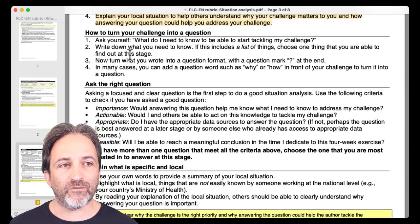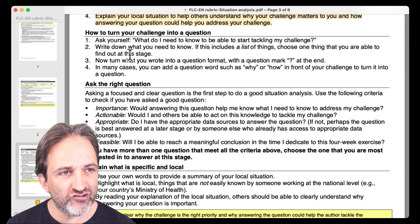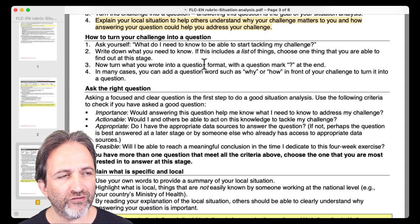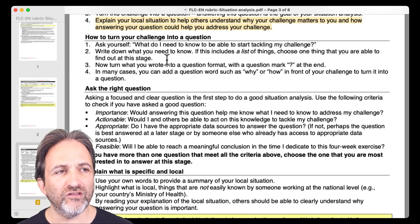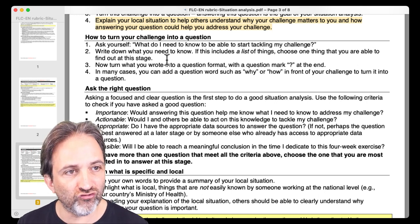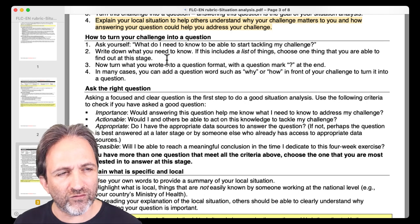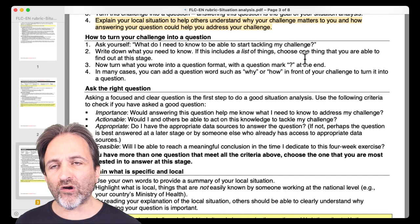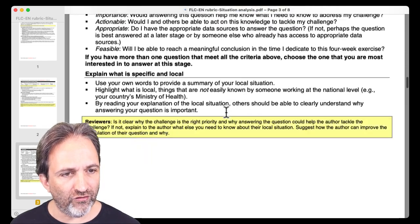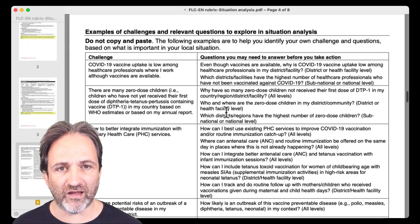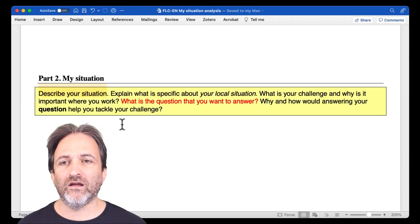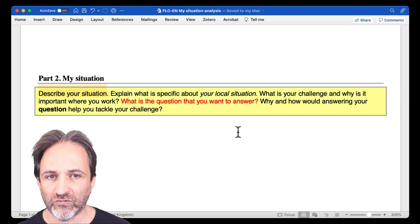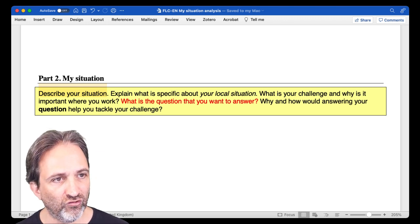Now, to go back to step three, or point three above, how to turn your challenge into a question, you can ask yourself, what do I need to know to be able to start tackling my challenge? Write down what you need to know. Now, if this includes a list of things you need to know, choose one thing that you're able to find out at this stage. That's what you're going to focus on in your situation analysis. And then turn what you wrote into a question. So we have examples on the following page. So on page four of the rubric, you have examples here. But again, if you're short on time, just write out everything you know, everything you don't know in relation to the question you want to answer, your challenge, and be specific about your local situation.